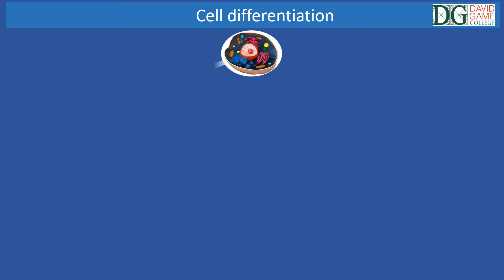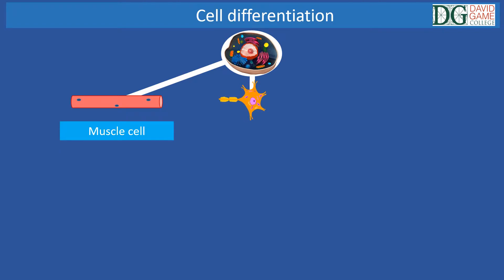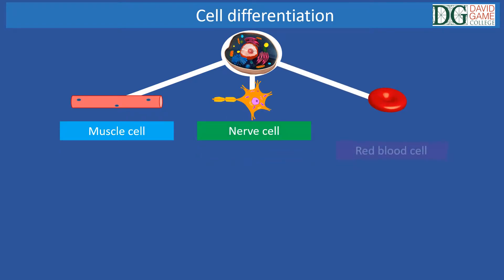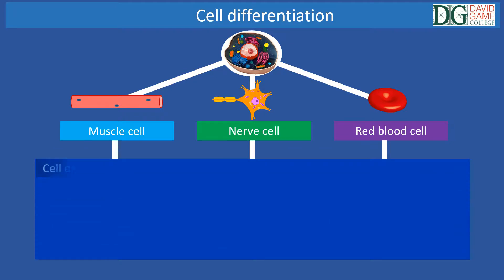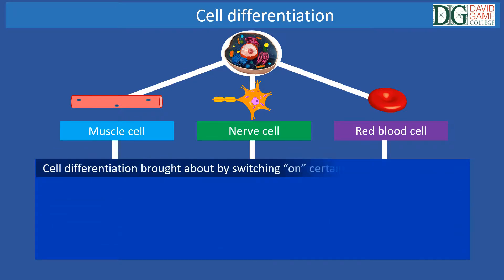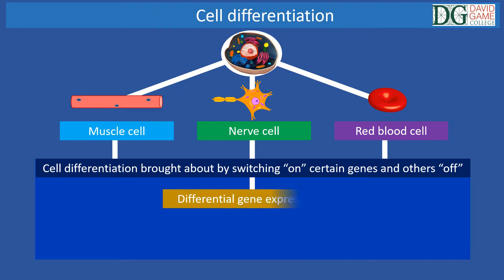Cell differentiation follows on from cell determination and is the process by which different cell types arise, resulting in cell specialization such as muscle cells, nerve cells or red blood cells. Cell differentiation is brought about by switching certain genes on and off in the process of differential gene expression. Differential gene expression results from the expression of some genes and silencing others.